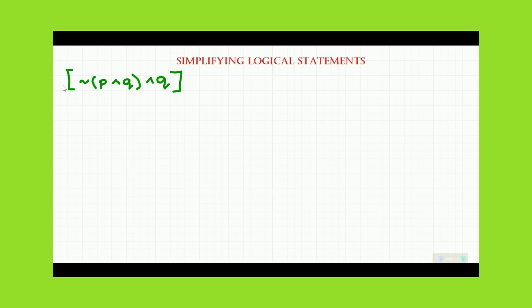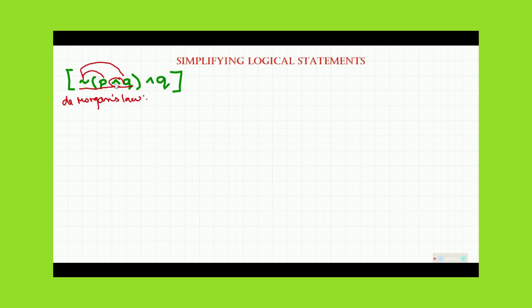To simplify this statement, first we will use De Morgan's law. We need to simplify the statement inside the parentheses. De Morgan's law states that we distribute the negation sign to P and Q, and at the same time we flip the connector. Since the connector here is 'and', we are going to change it to 'or'.